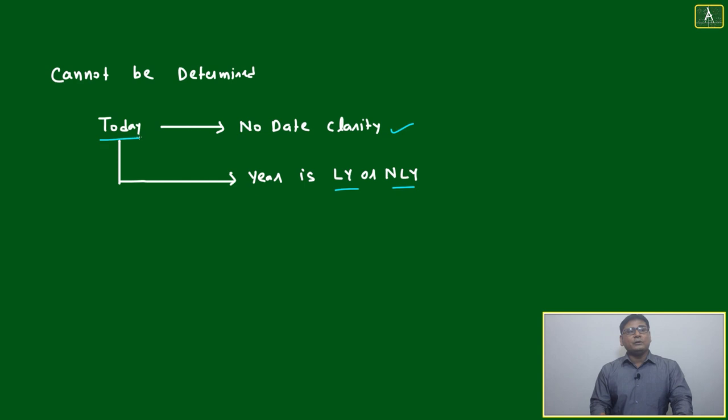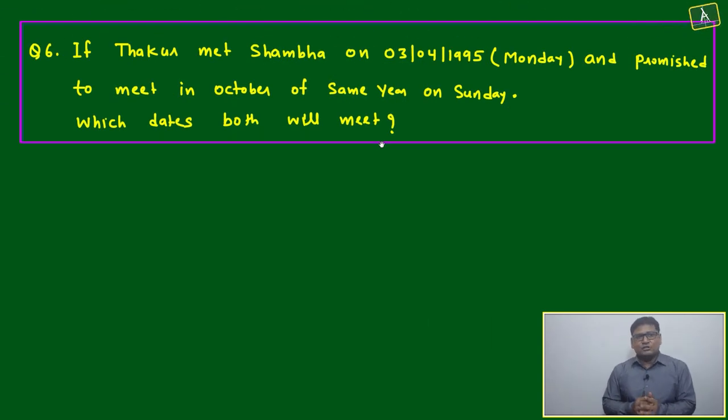All three can be marked because there's no date clarity here - is it leap year or non-leap year? We don't know. Today's meaning is not clear. Now we'll come to question number six. Question number six will give you the idea about the meetings, how two persons can decide their meeting based on a certain reference.